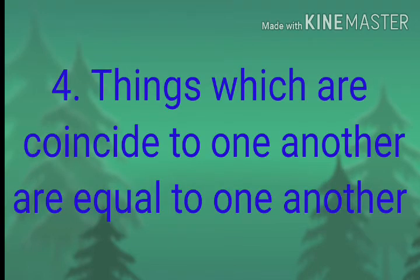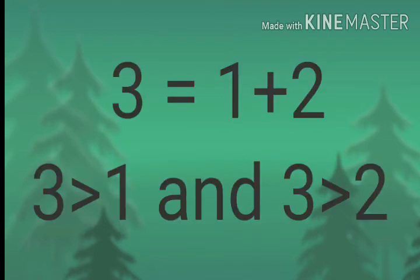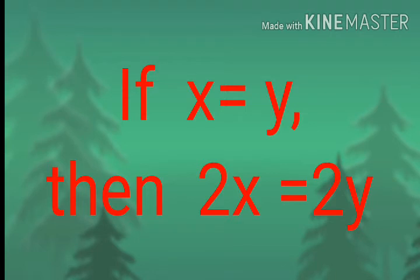The fourth axiom is: things which coincide with one another are equal to one another. That means if a line coincides with another line, then they are the same. The fifth axiom is: the whole is greater than the part — if 3 equals 1 plus 2, then 3 is greater than 1 and 3 is greater than 2. The sixth axiom is: things which are double of the same things are equal to one another — if x equals y, then 2x equals 2y.